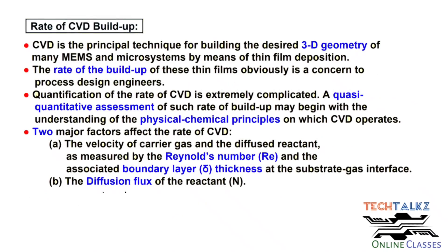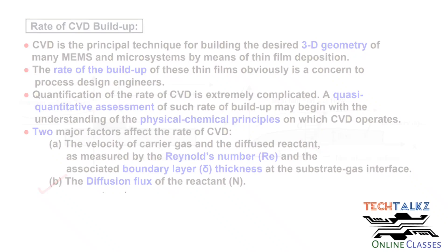Regarding the rate of CVD process, two major factors affect it. The first one is the velocity of the carrier gas and diffused reactants, as measured by Reynolds number and the associated boundary layer thickness. The second factor is the diffusion flux of the reactant.